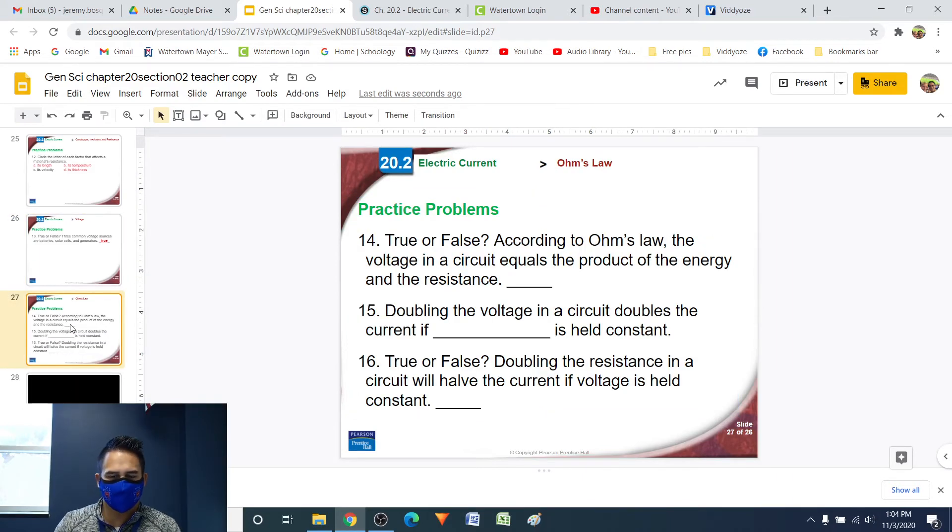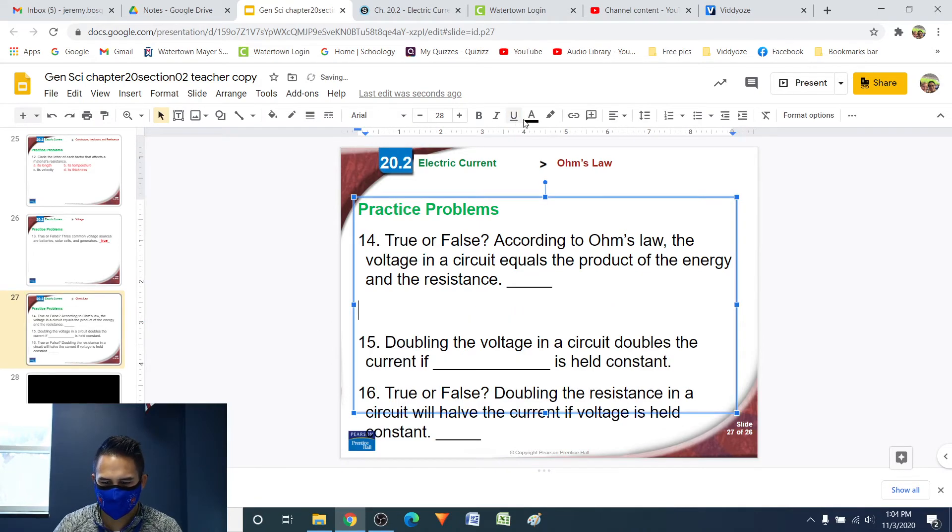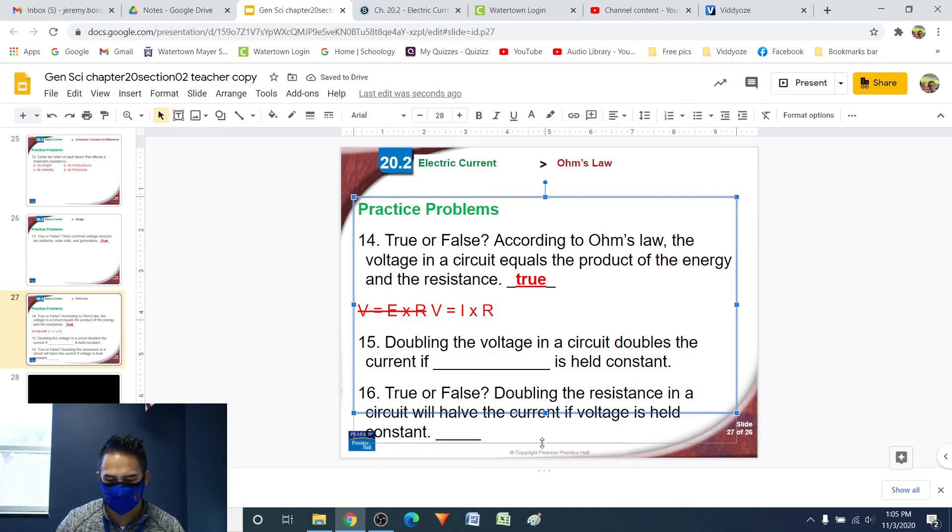Number 14, true or false, according to Ohm's law, the voltage in a circuit equals the product of the energy and the resistance. So basically what this is saying is that voltage in a circuit is going to be equal to the product, which is like an answer to a multiplication problem, so the energy times the resistance. So this question is saying that in Ohm's law, voltage is equal to energy times resistance. That's not true. That's false. We know that that's not true because Ohm's law has nothing to do with energy. It has things to do with current. So Ohm's law is not voltage equals energy times resistance. Ohm's law is voltage equals current times resistance. So I times R. Remember that I stands for current.